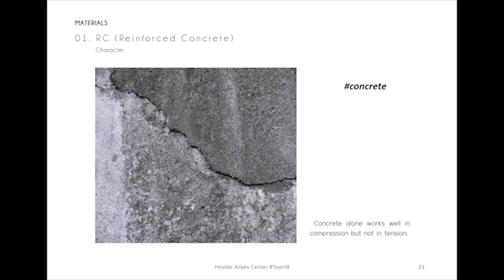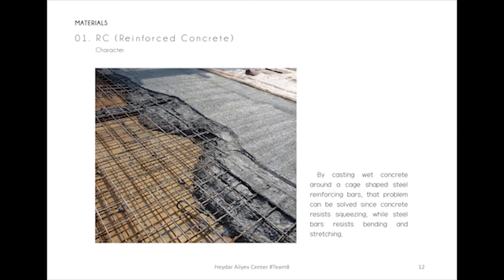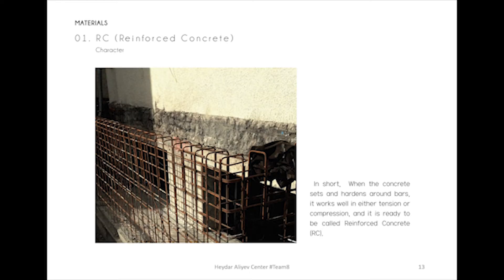Concrete alone works well in compression, but not in tension. By casting wet concrete around a cage-shaped steel reinforcing bars, that problem can be solved, since concrete resists squeezing while steel bars resist bending and stretching. In short, when the concrete sets and hardens around the bars, it works well in either tension or compression, and it is ready to be called reinforced concrete.